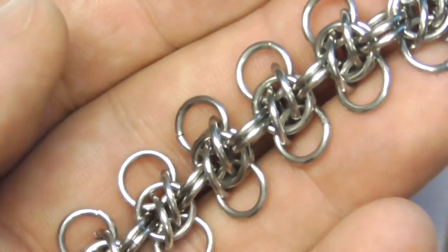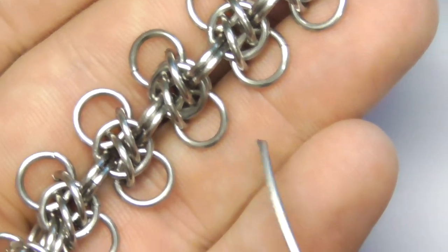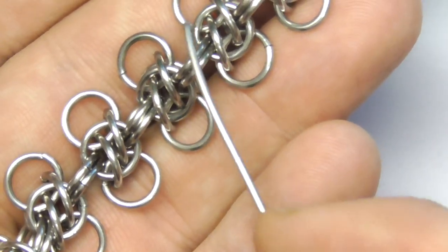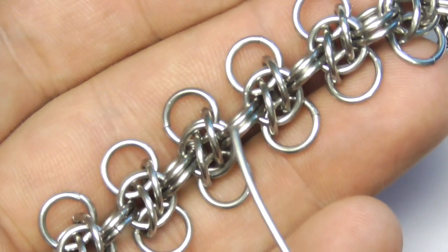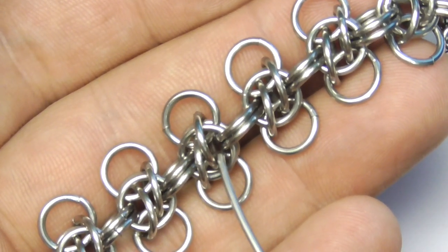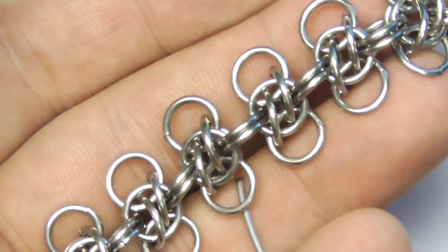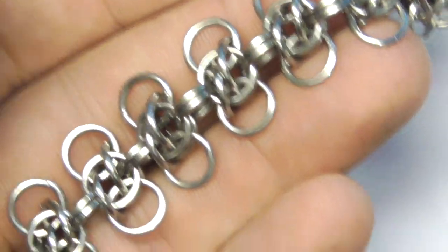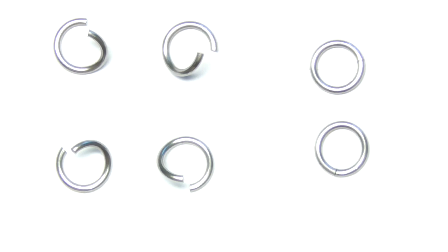As you can see the honeybee chain consists of separate units. So in the beginning I will show you how to make a unit for honeybee chain. So for each unit we will need four open rings and two closed rings. Here they are.